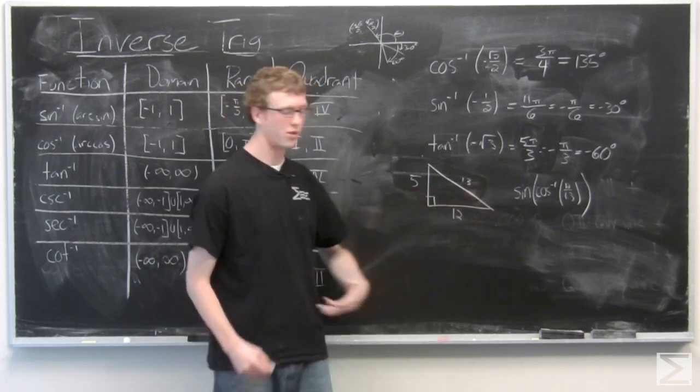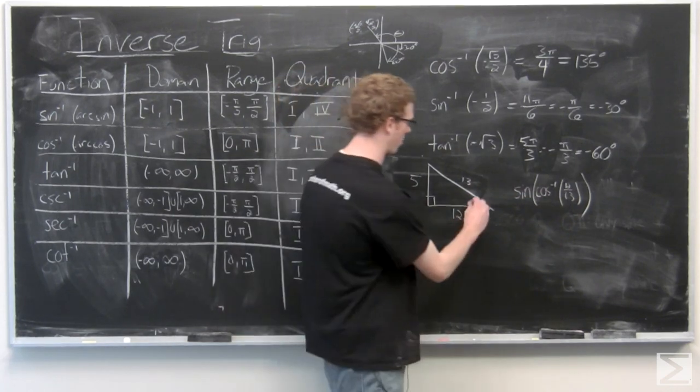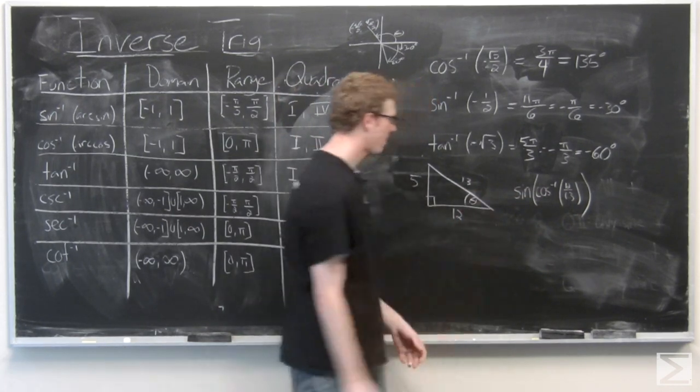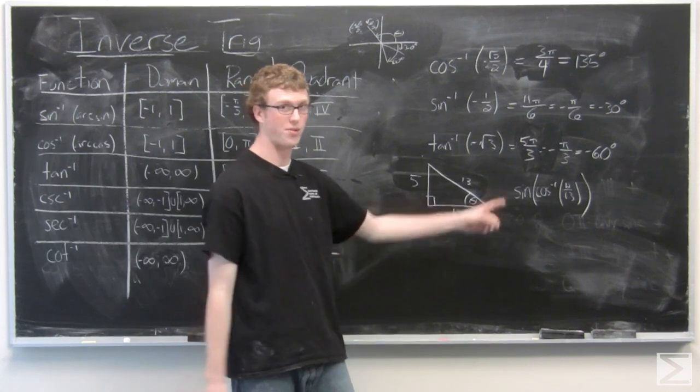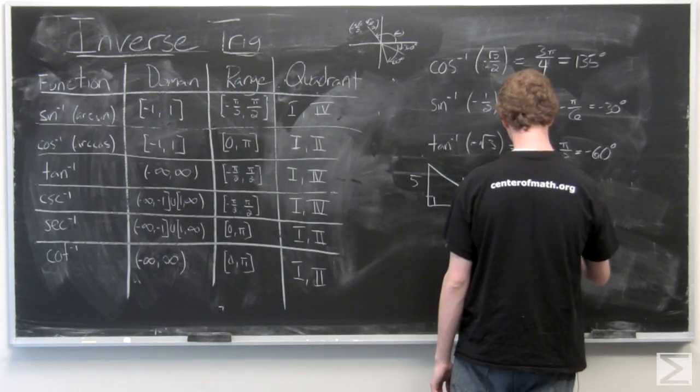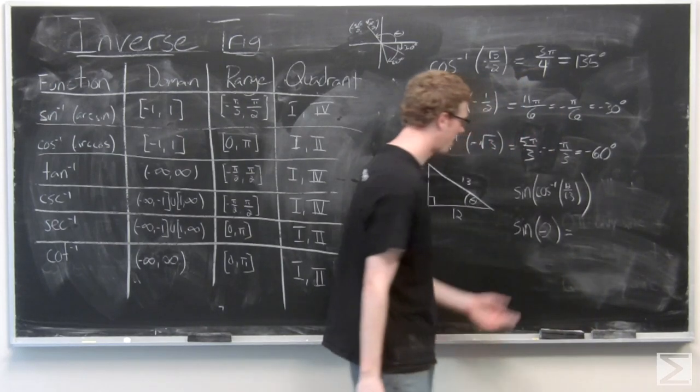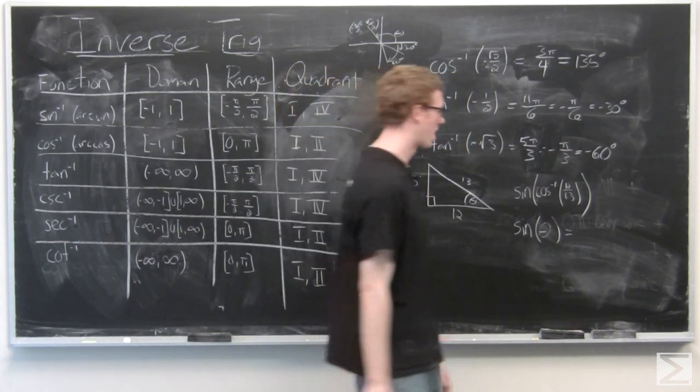So in this triangle, the 12/13 would correspond to that inverse sine. So that corresponds to this angle here. And we can go ahead and rewrite this as sine of θ. And then sine of θ is just opposite over hypotenuse.